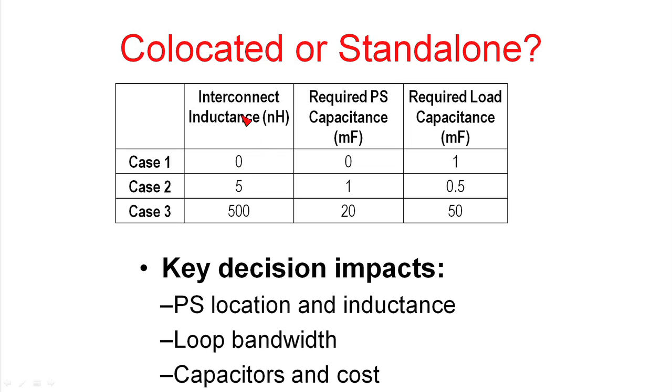I've presented three different cases. The first is zero interconnect inductance, which represents the co-located power supply. The five nanohenries represents a power supply that might be a brick you would stick on your circuit board located very closely to the load. The final one is one we were talking about earlier, which might be cabled in or across the way from your load. In the first set of simulations, I was able to run the system with zero power supply capacitance and required all my capacitance to be at the load. Since there was zero interconnect inductance, that allowed me to eliminate this capacitor. I was able to use one millifarad of capacitance for a 30 millivolt variation for a 20 amp step.